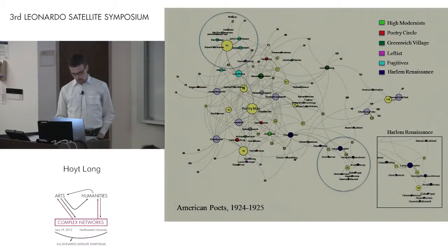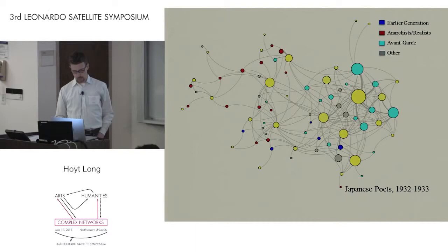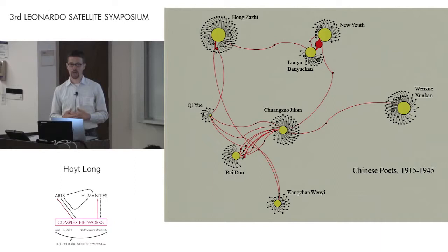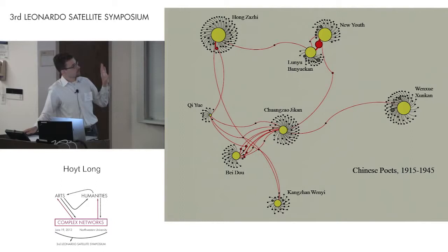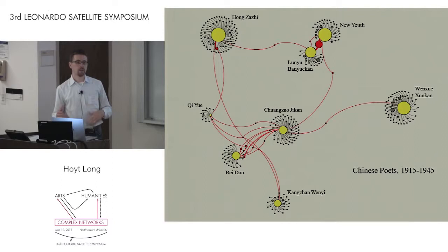We have similar confirmations in the Japan data. The China data is radically different, essentially because there aren't any good indexes, so we've had to work backward—we chose a set of journals and then constructed the data from that. But even at this provisional stage, we're seeing that it does confirm certain things we know about literary societies in Republican-era China, which is that they were highly fractious and that there was very little overlap between them in terms of cooperation and brokerage.